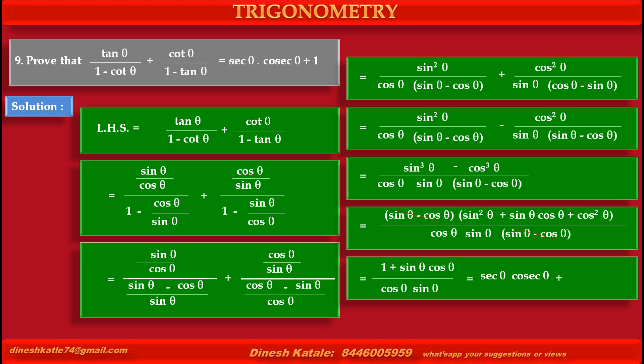The common term sin θ cos θ upon cos θ sin θ cancels, and the second term becomes 1. So the result is sec θ cosec θ plus 1, which equals the required right hand side.